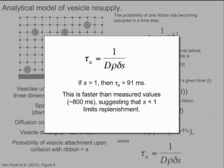If we assume that the attachment probability is 1, meaning that all colliding vesicles attach, this gives a time constant of 91 milliseconds. This is roughly an order of magnitude faster than our empirically measured fast time constant of replenishment, implying that other factors beyond the rate of vesicle collisions with the ribbon, such as attachment probability being less than 1, play an important role in slowing down vesicle replenishment.